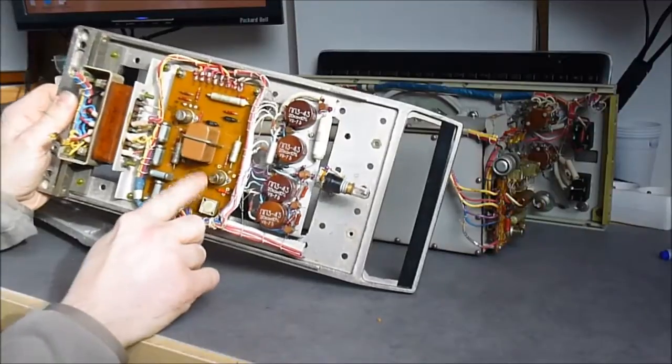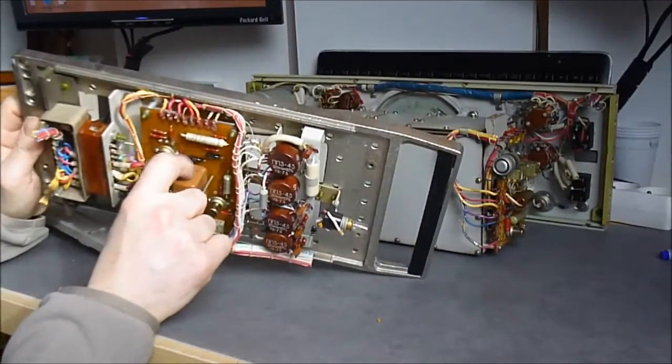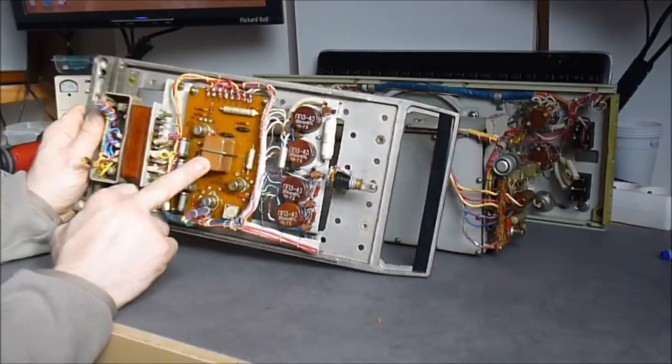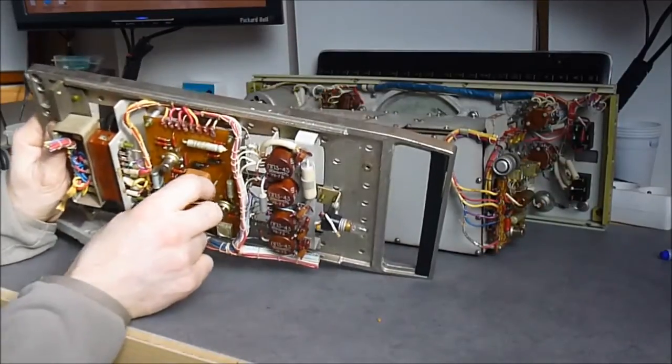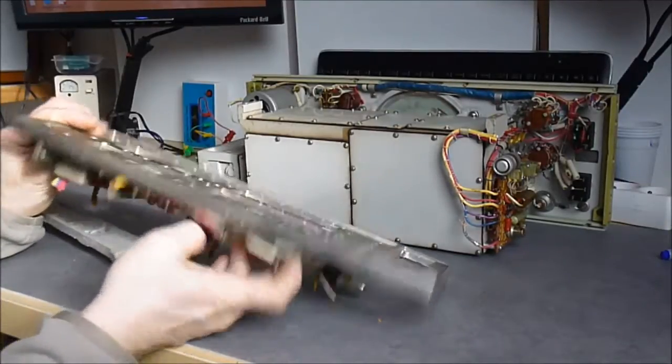You can see the three transistors in metal cans of course. Some paper oil capacitors. It is quite an unusual way to see how it is mounted here. Here is a bracket and it is directly soldered on the PCB.